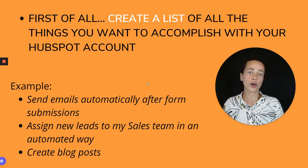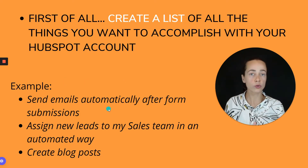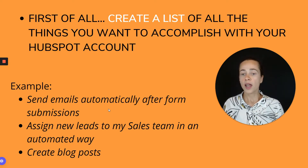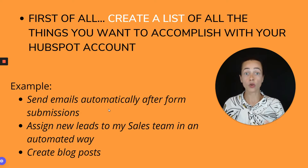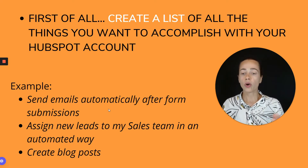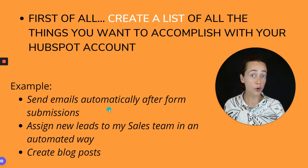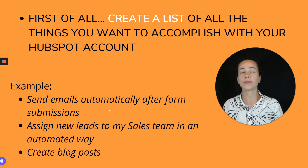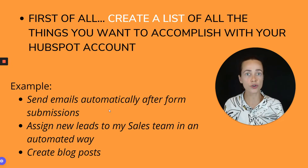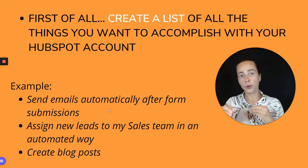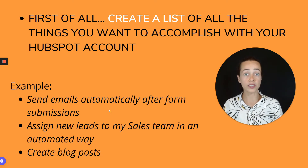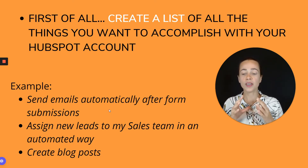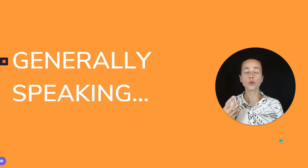Create a list of your HubSpot needs — things you want to do with your HubSpot account. In your list you could include things such as: 'I want to send emails automatically after form submissions,' or 'I want to assign new leads to my sales team in an automated way,' or 'I want to create blog posts or a whole website with HubSpot,' or 'I want to use HubSpot for social media scheduling.' Once you have this list, you'll be able to research what kind of packages address those specific needs.